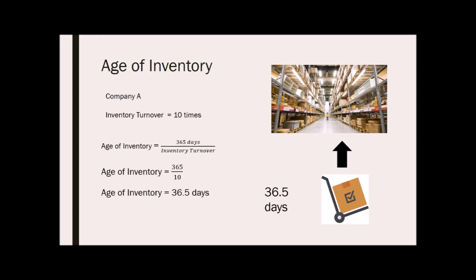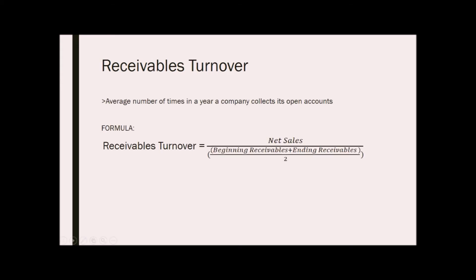Next, we will look at receivables turnover. This measures the efficiency of extending credit and collecting the same. It indicates the average number of times in a year a company collects its open accounts. The receivables turnover ratio is most often calculated on an annual basis, though it can be broken down to find quarterly or monthly accounts receivable turnover as well. The formula is net sales over the average accounts receivables.